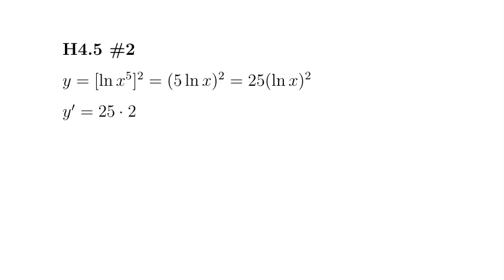This is a power, so we'll put 2 in front. We need to keep the natural log of x and then subtract 1 from the power, so it's going to be natural log of x to the first power. Then you have to use the chain rule.